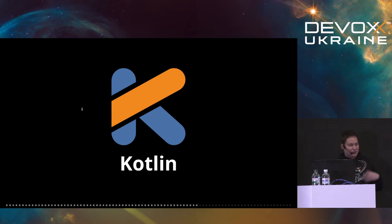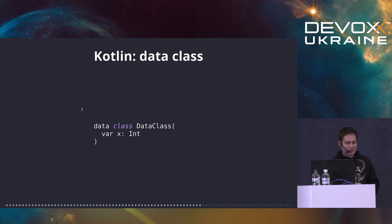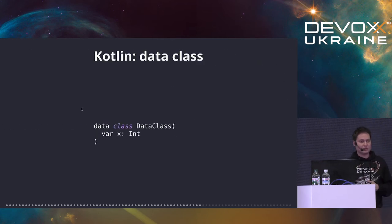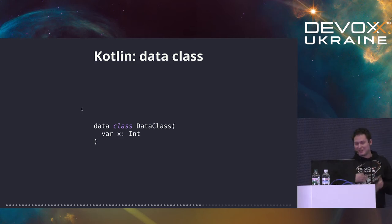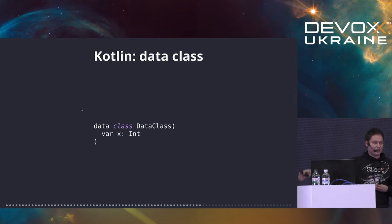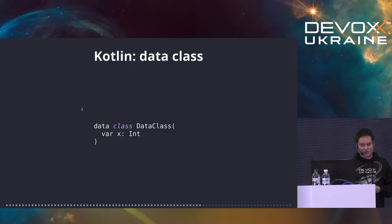I hope now you've been warmed up enough — this is the time for Kotlin. Let's have a look at what happens in Kotlin. In Kotlin there are data classes. You basically say 'this class is going to be a data class' — it's going to contain only data, no logic. You declare the fields, and then magic happens. Which magic? Let's have a look.